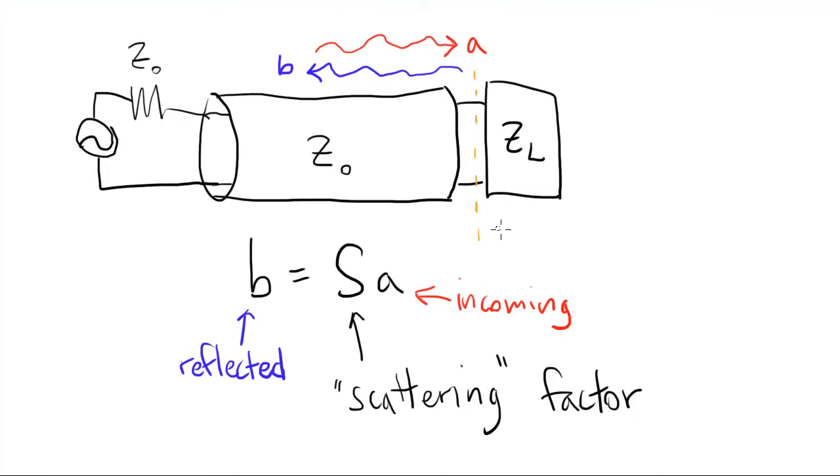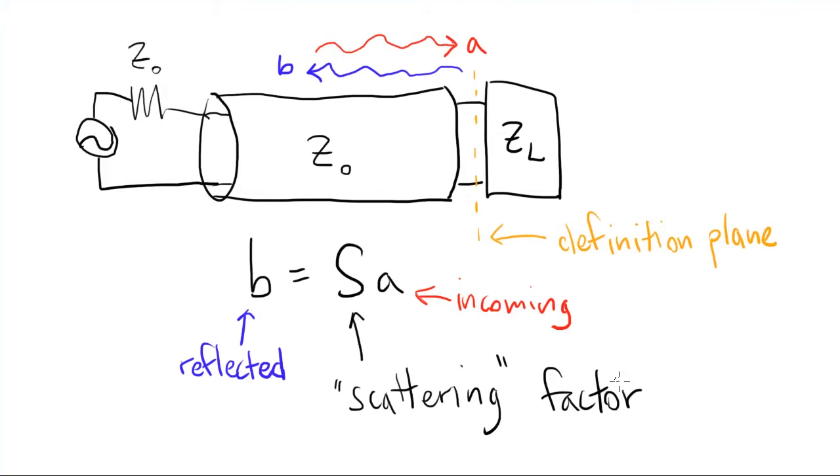That's why we need to define a reference point, or definition plane. So this S is our one-dimensional scattering parameter. It's for a one-port linear network. In general, S is going to be a function of frequency, but we'll worry about that later.